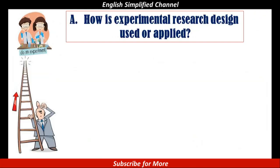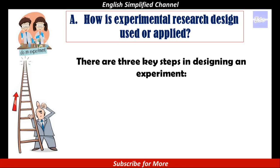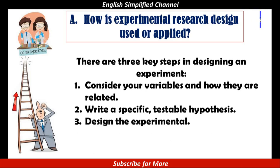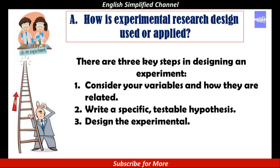Now let's see how experimental research design is used or applied. In conducting experimental research, there are three key steps that you should consider: 1. Consider your variables and how they are related. 2. Write a specific testable hypothesis. And 3. Design the experimental. Let's discuss one by one.